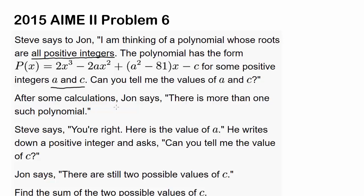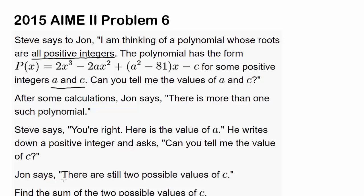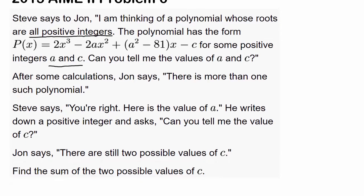After some calculation, which we are about to do, John is going to say there is more than one such polynomial. Steve is like, you're right, here is the value of a, and he's going to write down a positive integer and ask, can you tell me the value of c? John says there are still two possible values of c, and we wish to find the sum of the two possible values of c.